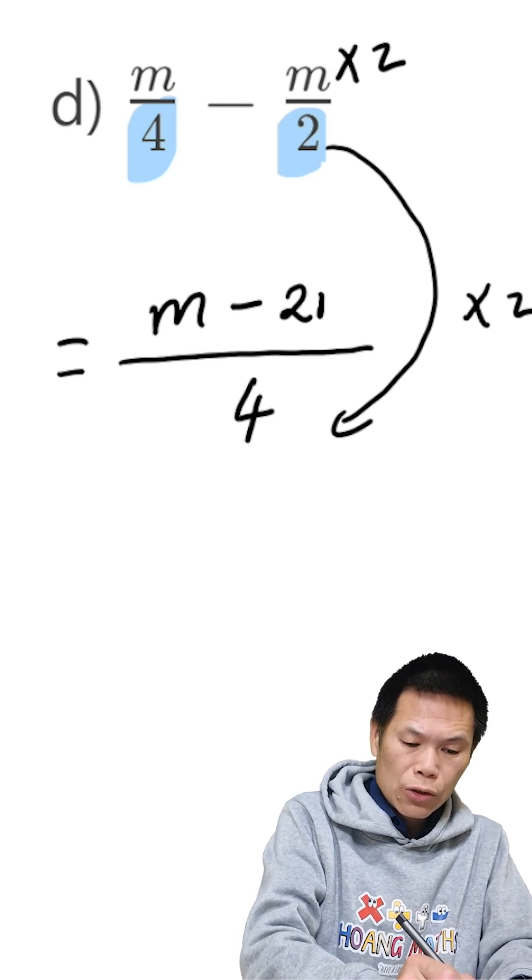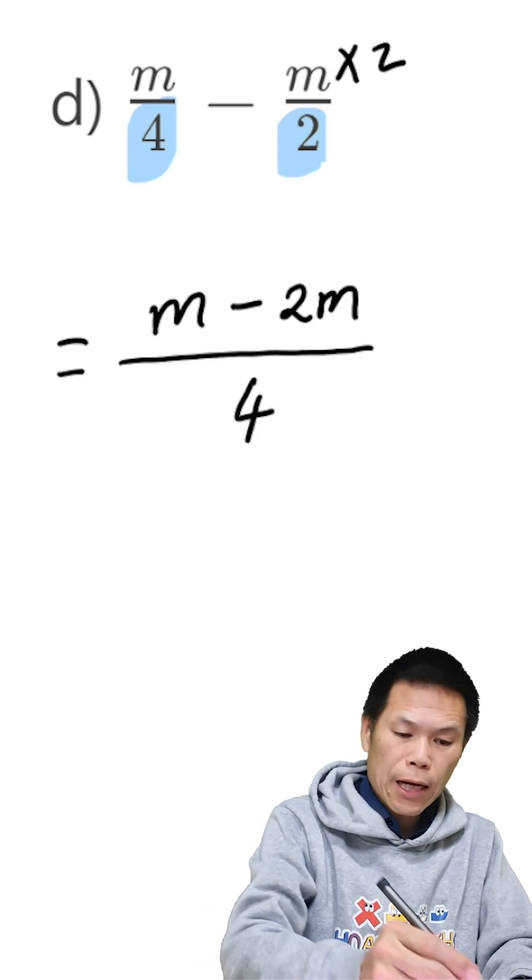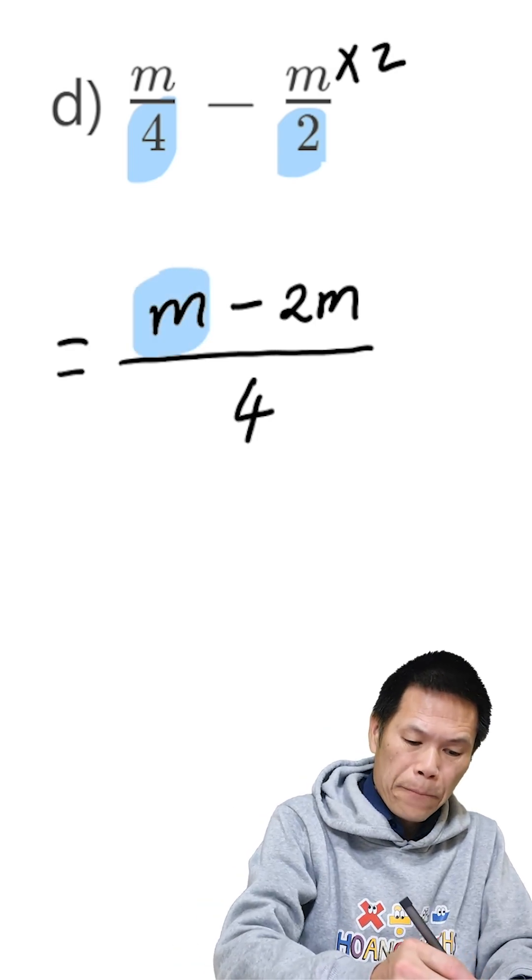So we minus 2m. Let me clear this. So now we collect like terms. So we have m minus 2m.